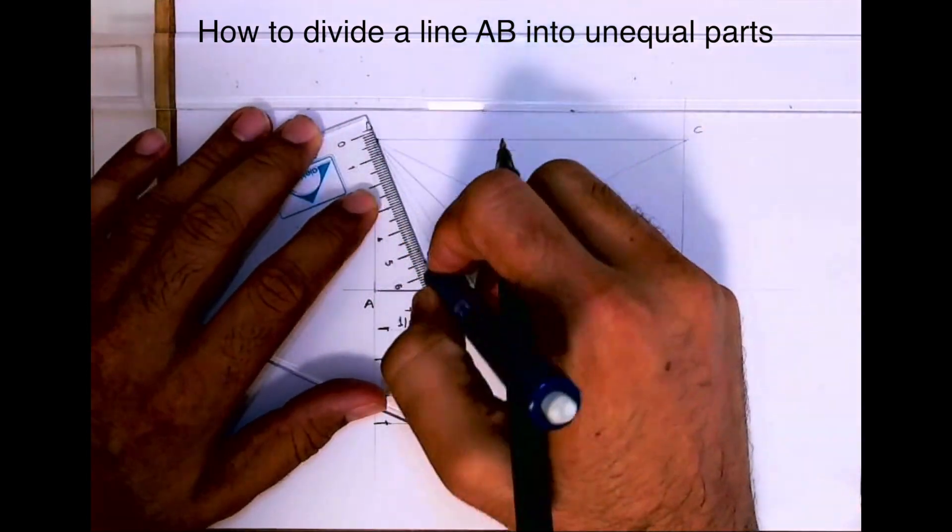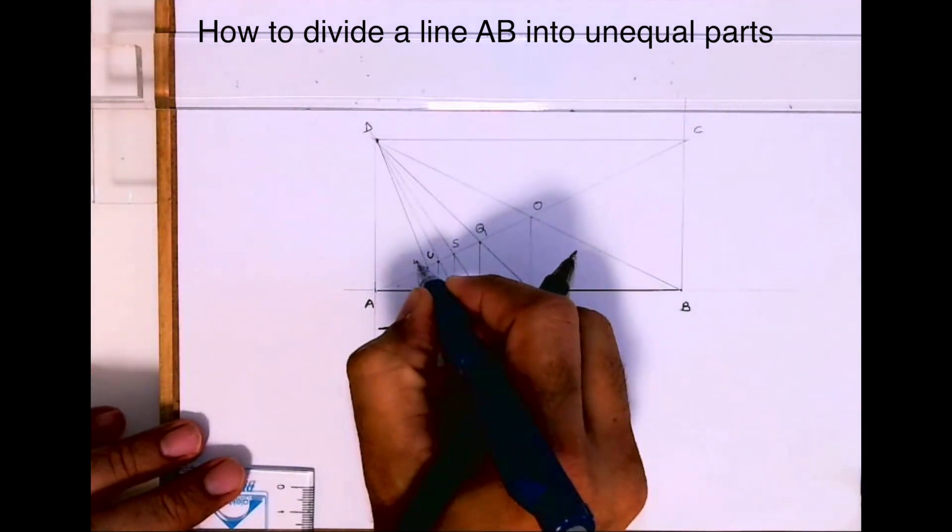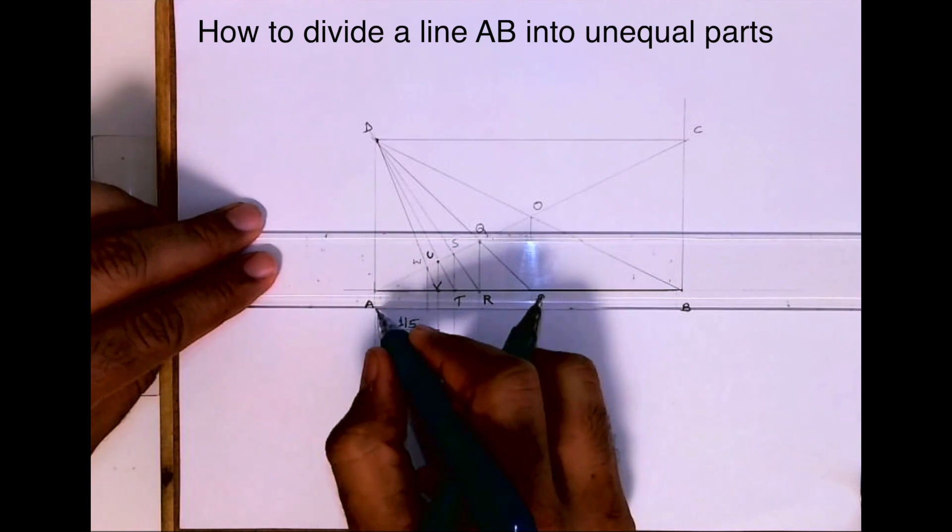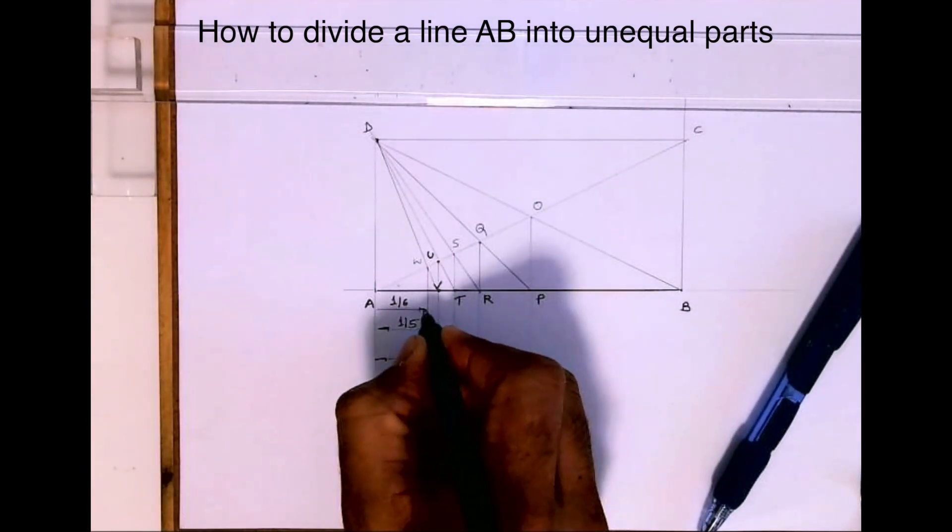Then join D to V. Wherever it will cut, that is W, and this will be point X. So this is one sixth of AB.